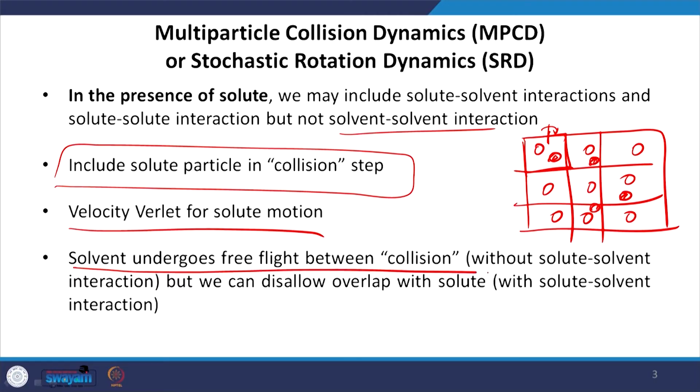The collision in this method refers to rotation of the cell, not collision between molecules. You may have real solute-solute collisions, and those are considered, but solvent-solvent collisions are meaningless because they are treated as an ideal gas. You can have meaningful solute-solvent collisions by disallowing overlap with the solute; alternatively, allowing the overlap disregards solute-solvent interactions.